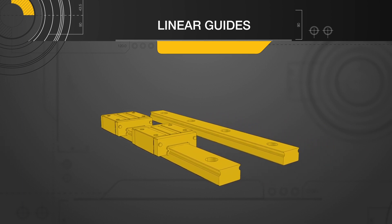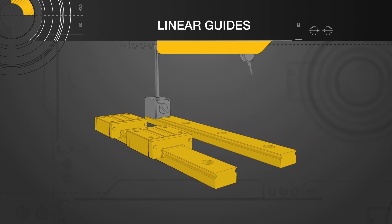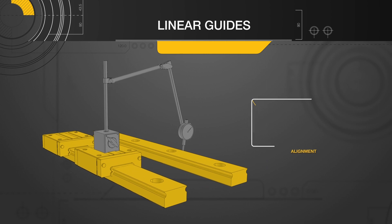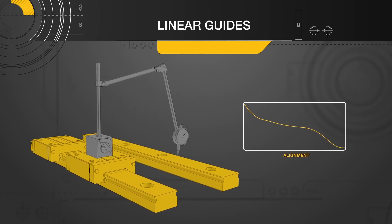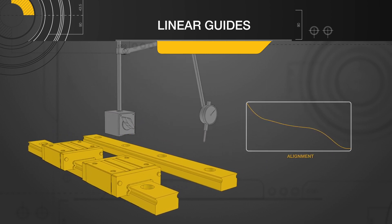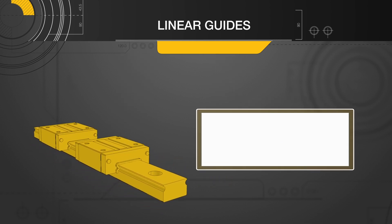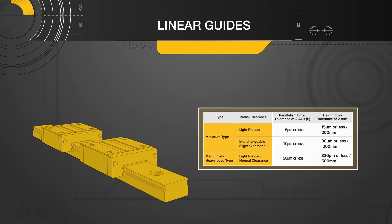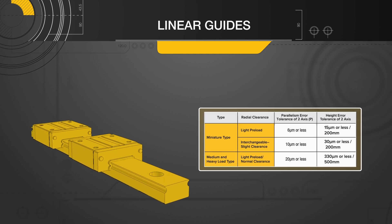The subsidiary rail should be aligned to the master rail using a dial indicator or jig according to the Rail Parallelism Error Allowance Specifications listed in the catalog. If the rails are not aligned within the specification, L10 life will decrease or the Linear Guides will bind.